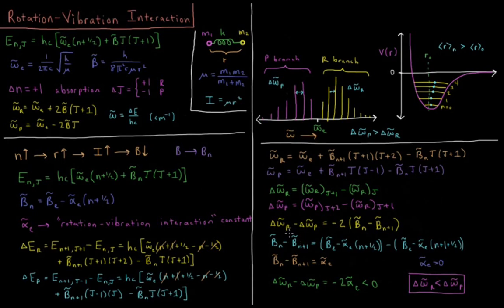So when we compute these two numbers, we have delta omega r minus delta omega p, once you work through all the algebra, equals minus 2 times b bar n minus b bar n plus 1. So this is going to equal b bar n minus b bar n plus 1. We get from our model for what b bar n is, b bar e minus alpha bar e n plus 1 half minus b bar e minus alpha e n plus 1 plus 1 half. So the difference between these two rotational constants is just alpha e. So substituting in up here, we have that the difference between subsequent peaks in the R branch minus that difference in the P branch is minus 2 alpha e.